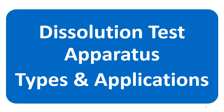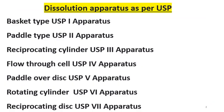Mainly we are discussing dissolution apparatus 1 and 2, that is basket apparatus and paddle apparatus. Because those apparatuses are routinely used. But there are total 7 types of apparatus as per USP. These are used as per the dosage form requirement.